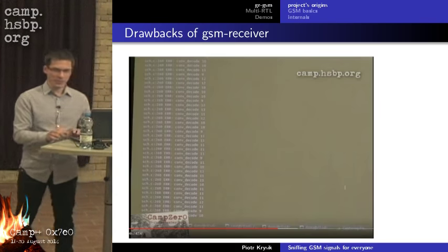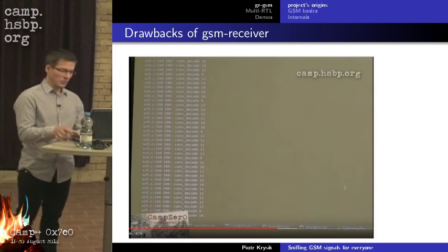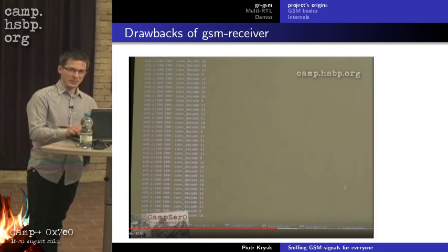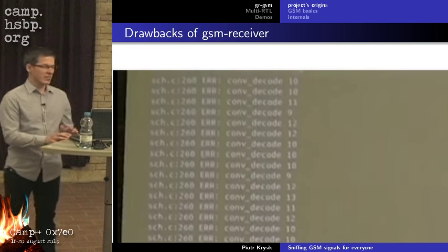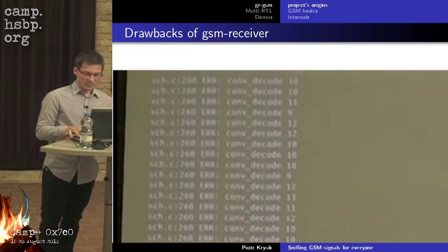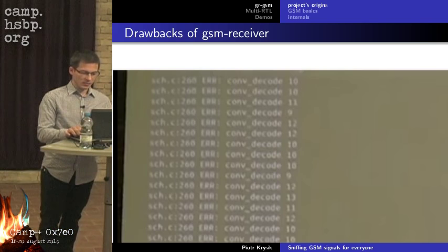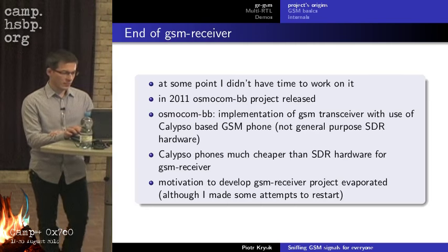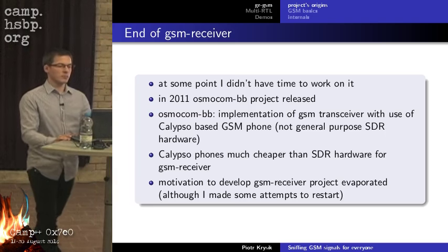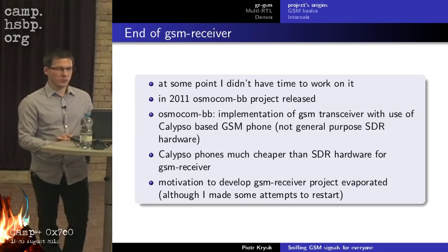This is from a talk by Domi from three years ago at this conference. At some point the GSM receiver gave errors exactly like a loss of synchronization due to that bug, and at some point development stopped.